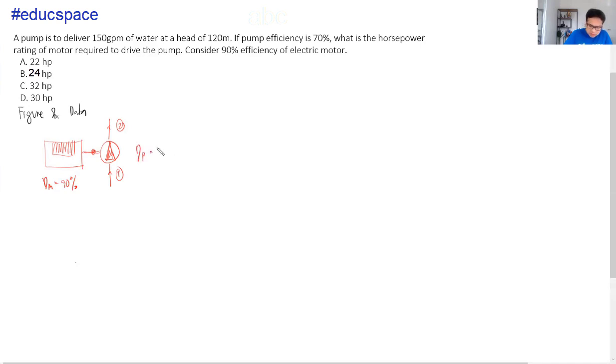Now, yung volume flow rate na binigay is 150 gallons or GPM, gallons per minute. And then the head is equivalent to 120 meters. So ang pinaka-question dito is, what is the rating? Mag-select tayo ng motor para dun sa ating pump.